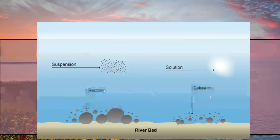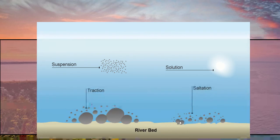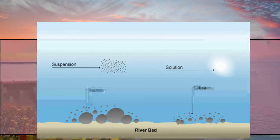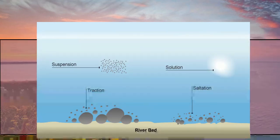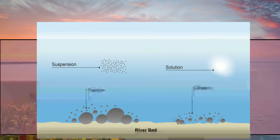The third one is saltation. This is where the rock fragments get slightly bigger. Here, the rock fragments bounce off the riverbed or seabed and move along — almost like a tennis ball bouncing. So it bounces into the water, then falls again, bounces off the seabed, and carries on along its transportational journey through the sea.